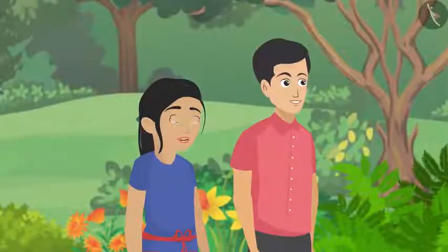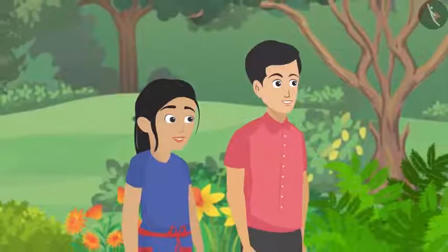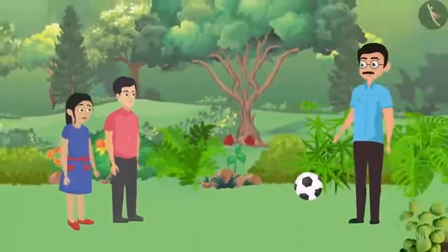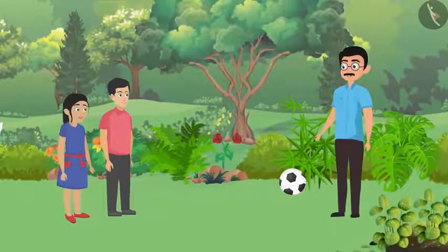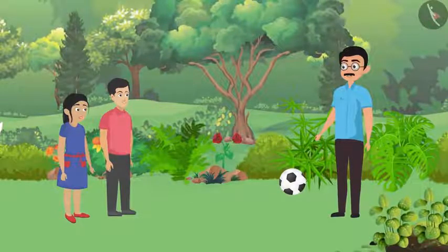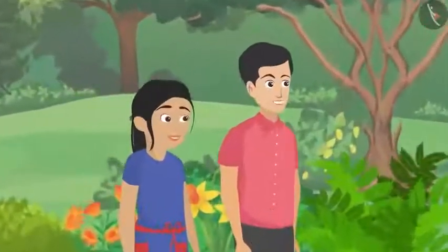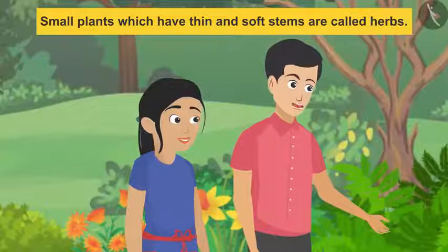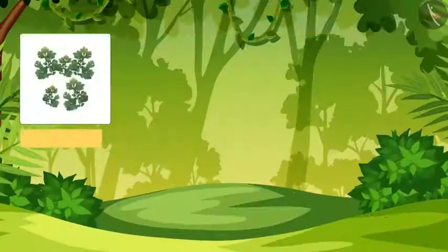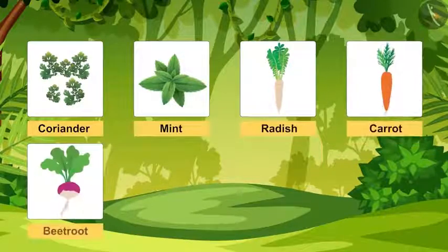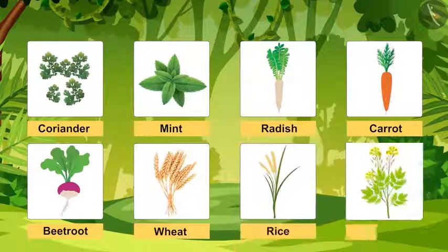Father suggests that Pankaj and Pushpa take turns explaining the plant types so both can understand and remember them. Pankaj starts with herbs — small plants which have thin and soft stems are called herbs.